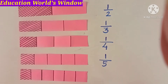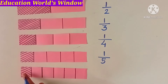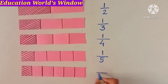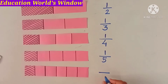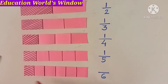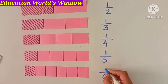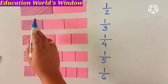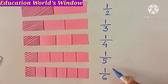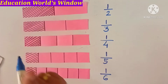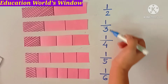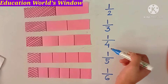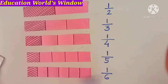This is the last strip. It has 6 parts, and the colored part is only 1, so we write 1 upon 6. We have written all the strips' colored parts as fractions. Each strip's colored numerator is 1, but the denominator is different for each.